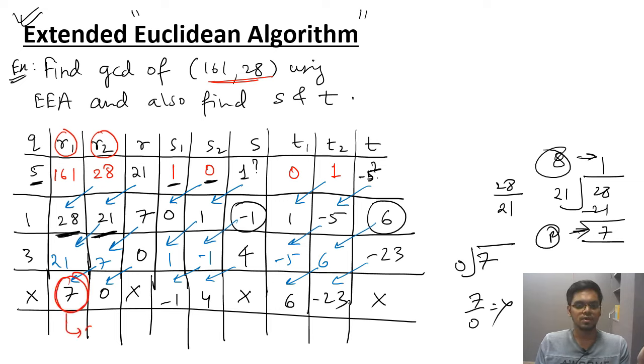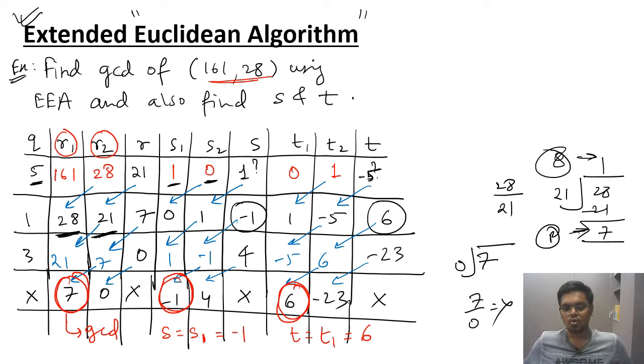The value of GCD is 7. This is GCD. The value of S. This is the value of S. S is nothing but updated S1, which is equal to minus 1. This is the value of T. T is nothing but updated value of T1, which is equal to 6. So your final answer is GCD is 7, S is minus 1 and T is 6. So I hope you got the solution and the process how to find the values of GCD and S and T using Extended Euclidean Algorithm.